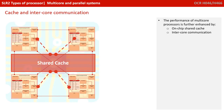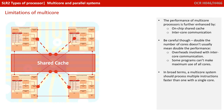The performance of multi-core processors can be further enhanced through on-chip shared cache and a method of inter-core communication. However, don't simply think that doubling the number of cores doubles the performance — there's a lot of overhead involved with inter-core communication, and some programs simply can't make maximum use of cores as they're not designed to. In broad terms, a multi-core system should process multiple instructions faster than one with a single core.